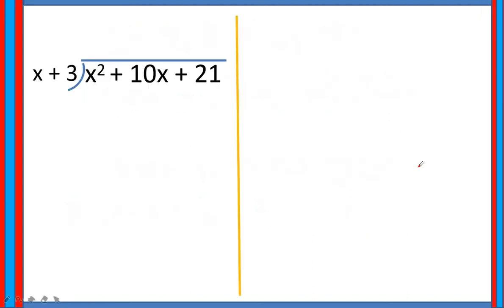Let us have an example. The given is x squared plus 10x plus 21 divided by x plus 3. So x squared plus 10x plus 21 is our dividend and x plus 3 is the divisor. Always remember, you have to arrange first the given polynomials — both the dividend and the divisor — in descending powers of x. It should start with the highest exponent down to the constant term.